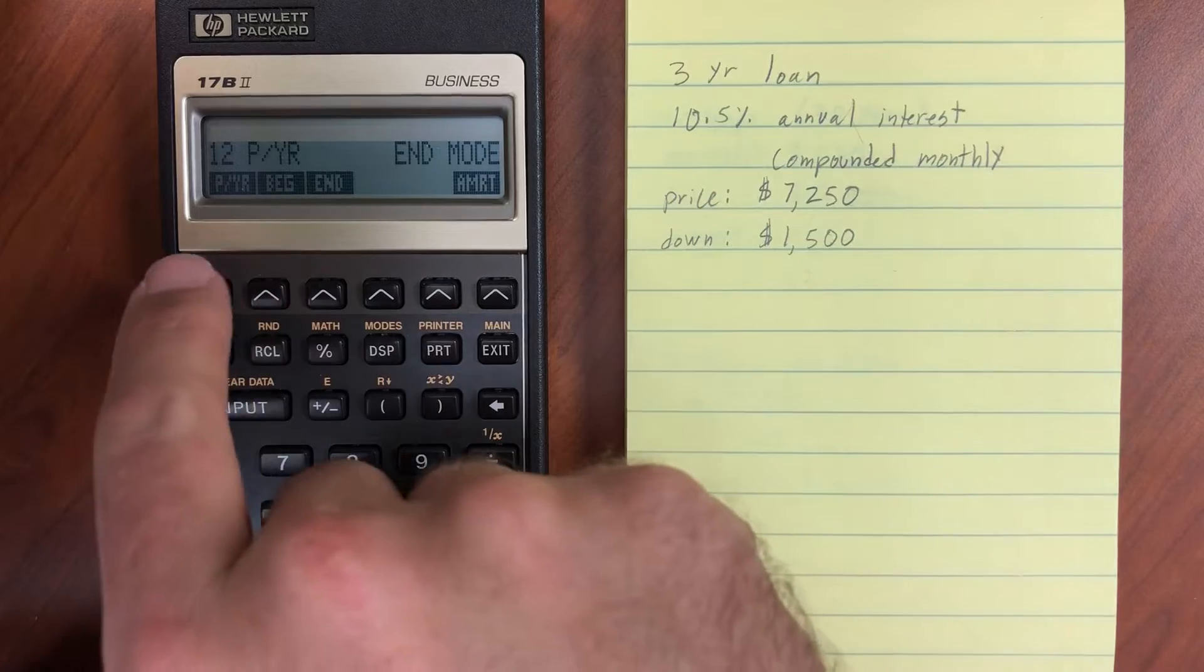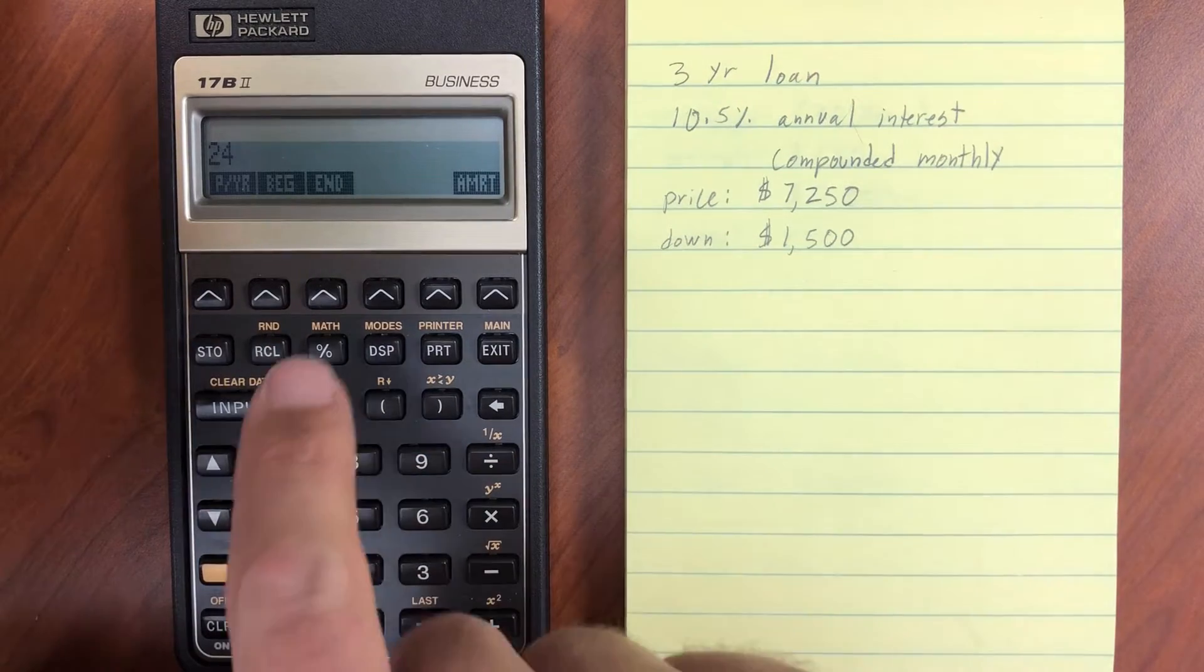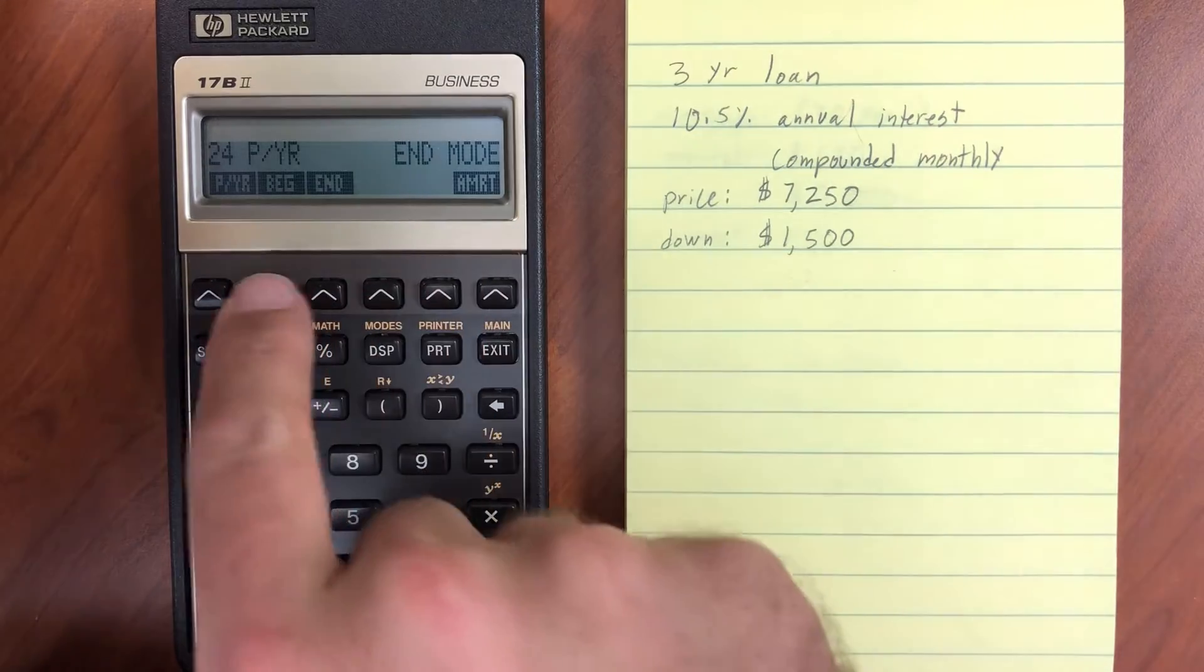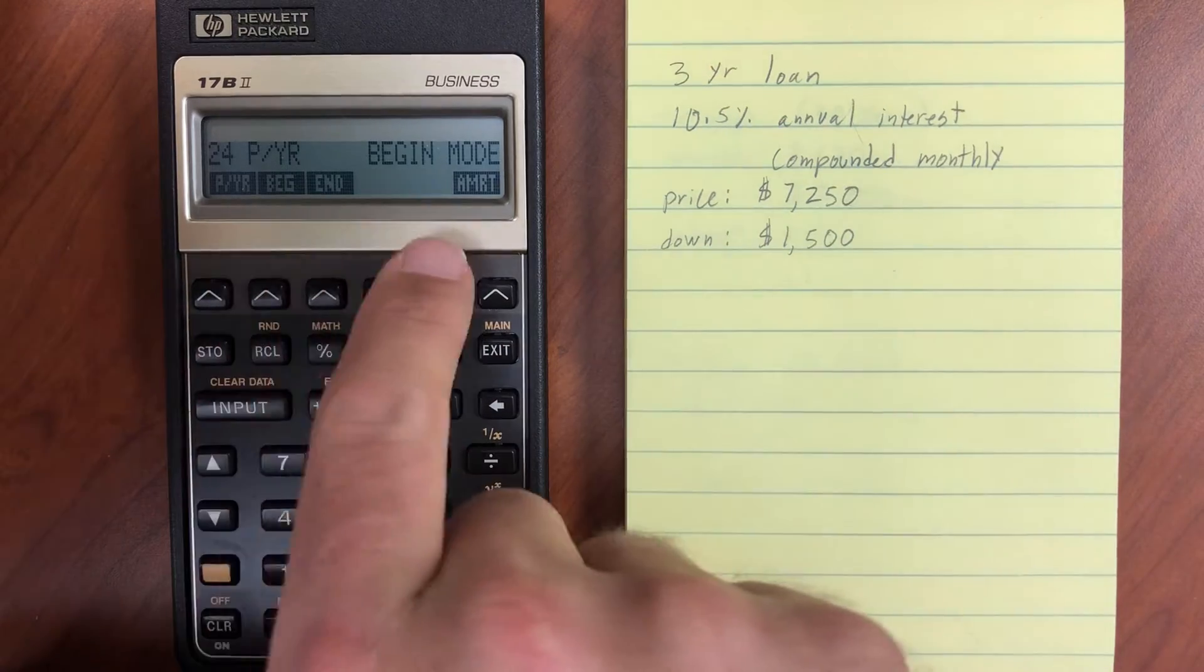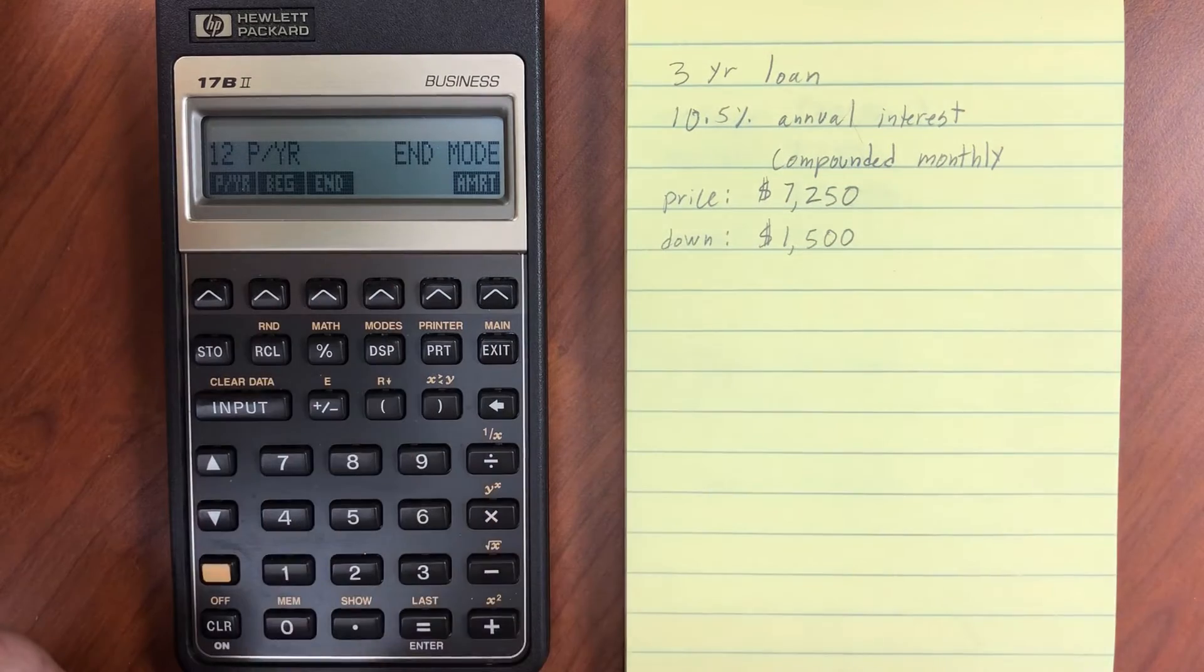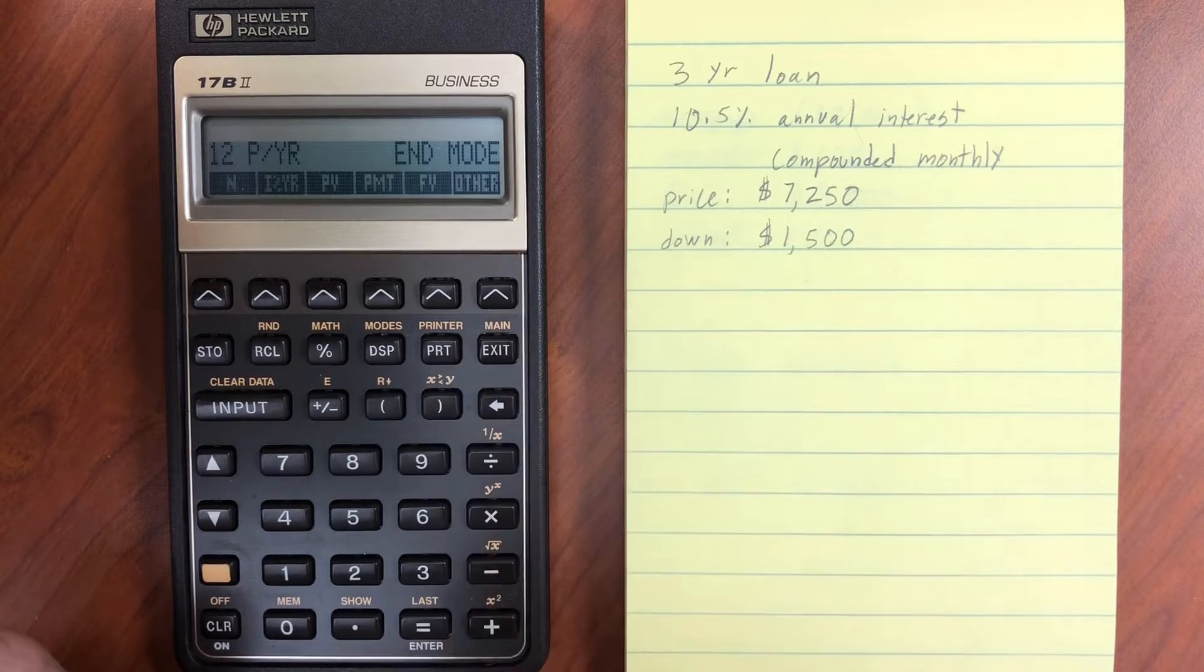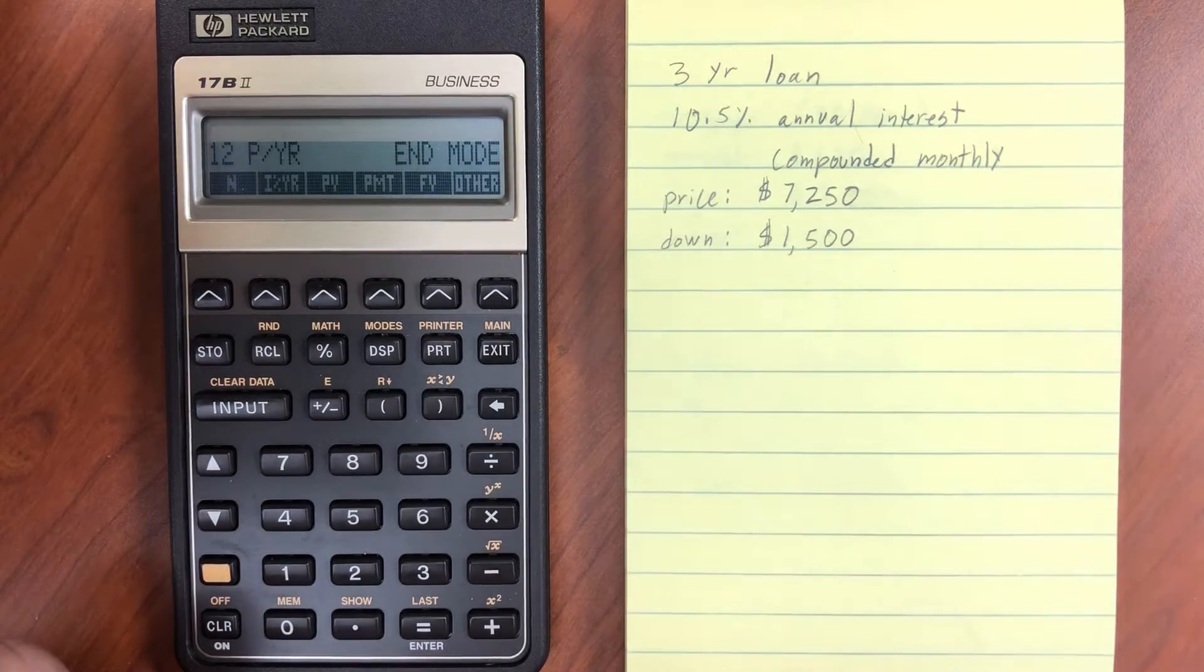If I go on to other, I can set the number of payments per year. So for example, if I wanted to do 24 payments per year, do a bi-monthly sort of thing, and set it to be at the beginning of the pay period or beginning of the period, then now we have 24 and begin. And if I do clear data here, then that will go ahead and set it back to the default of 12 periods per year and end mode.